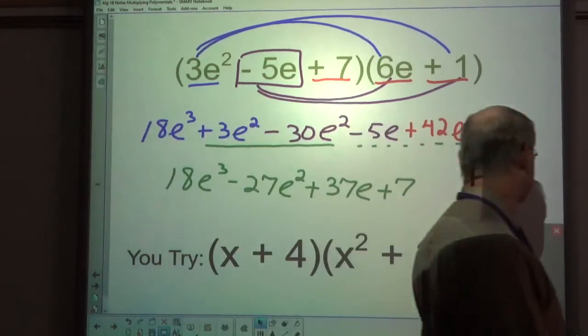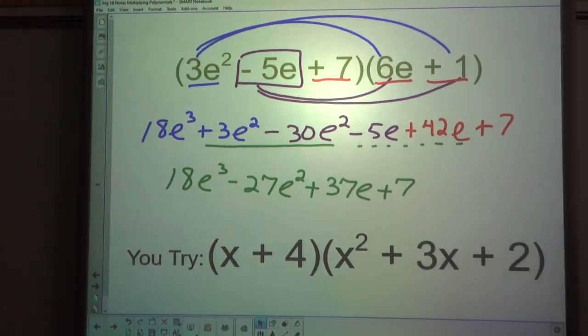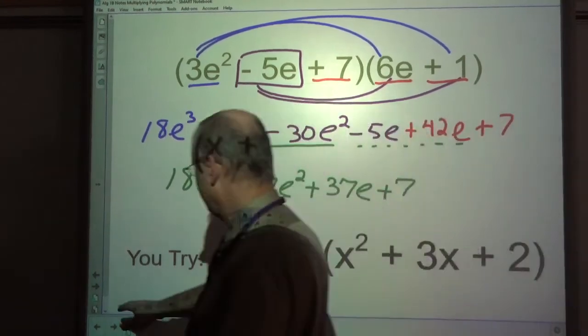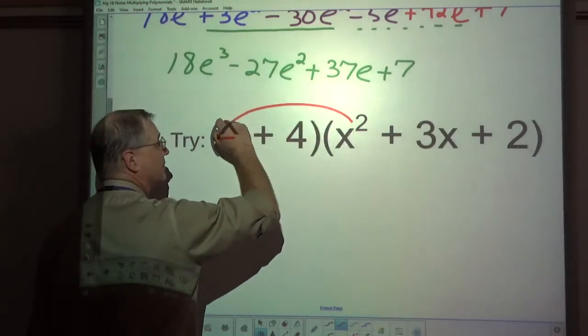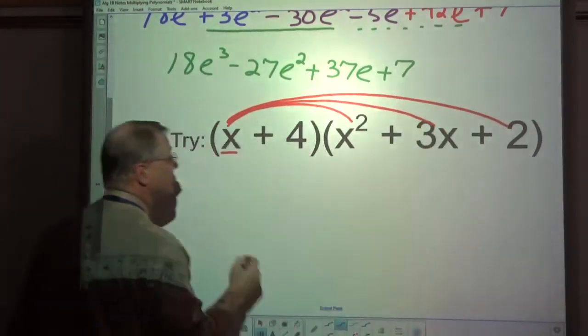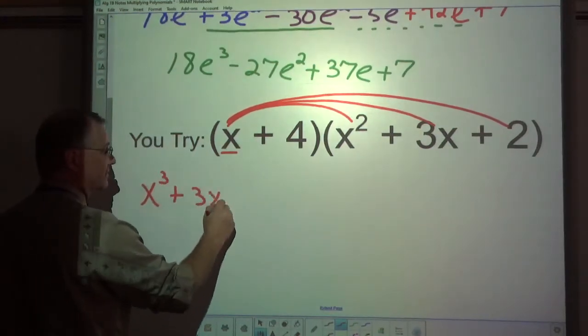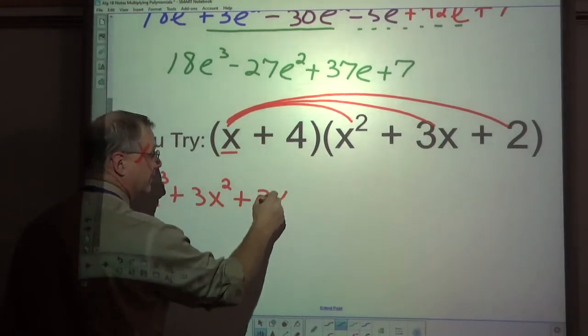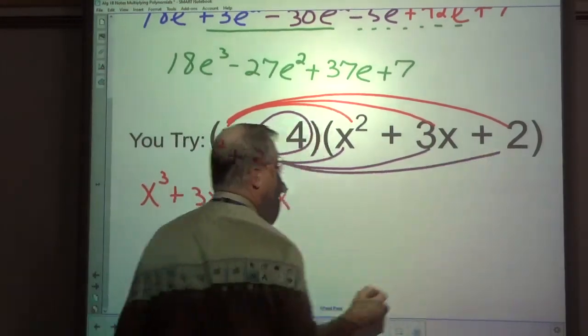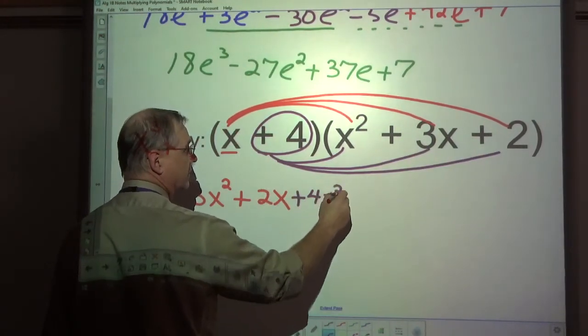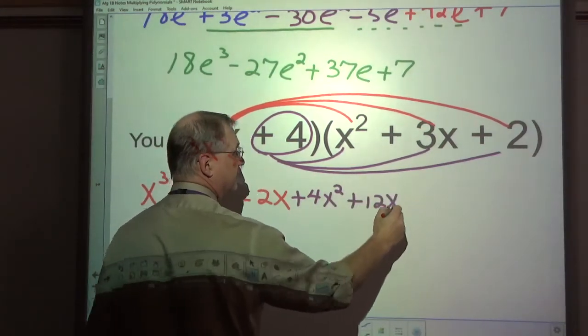Now you give this one a try. It does not matter to me whether you change the order of these or leave it as is. But try distributing it. See what you get. As you unpause, you now have the opportunity for me to go through this. I'm going to take the x and distribute. So I get x to the third plus 3x to the second plus 2x. Then I'm going to distribute the 4 plus 4x squared plus 12x plus 8.